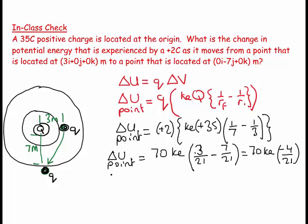So ΔU_point equals -40/3·K_E, which equals -13.3·K_E. It's a change in potential energy, so it's in joules. There we have it.